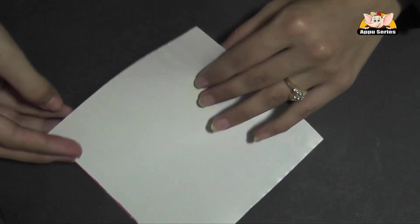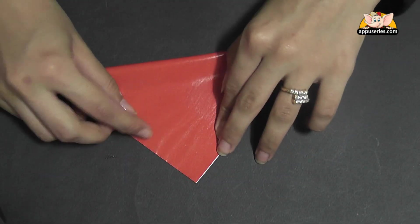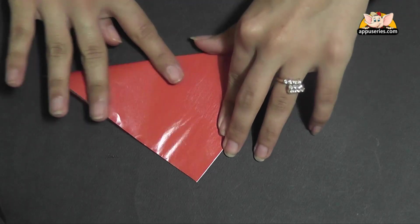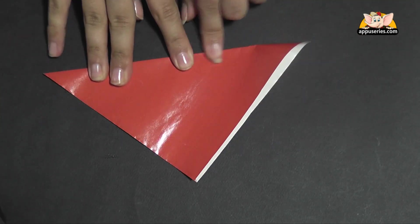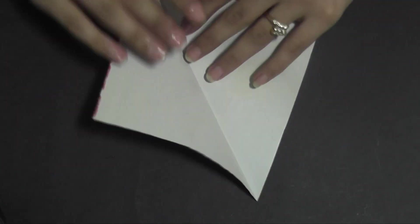We'll start with a square piece of paper. Fold it in half diagonally. Then we'll fold it in half in the other direction.